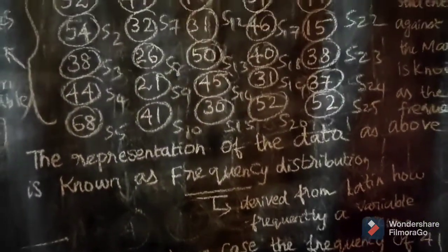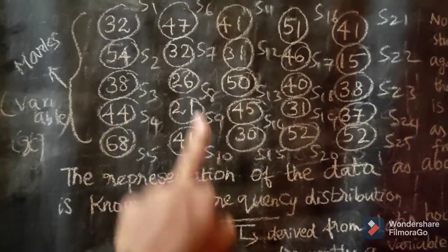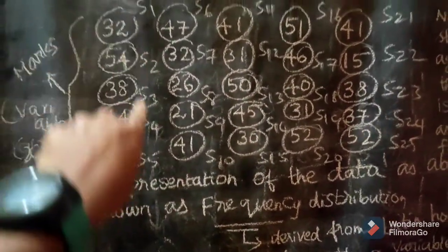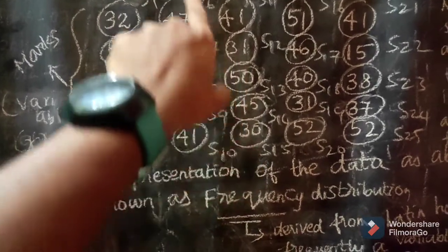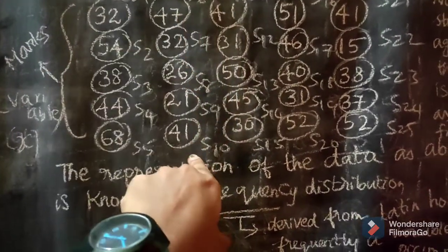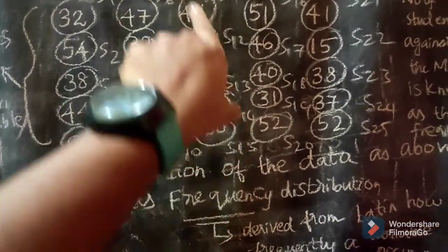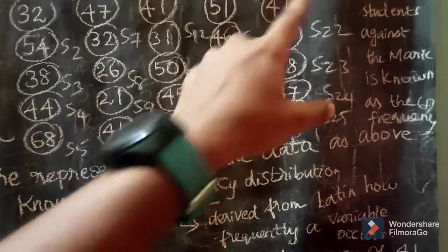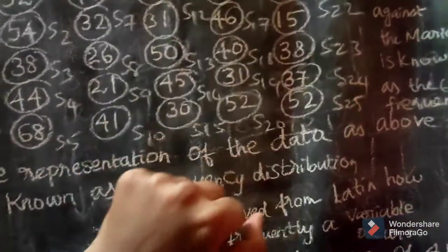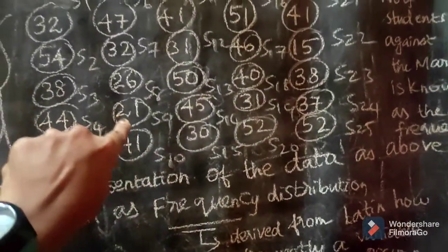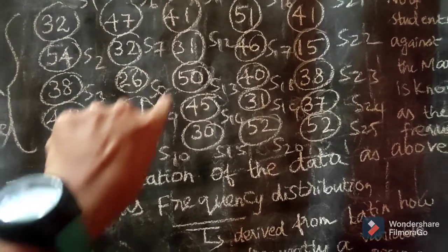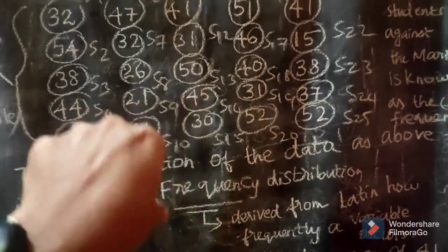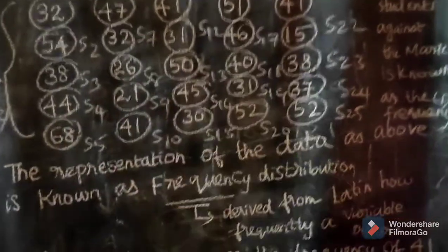For example, looking at the above case: take the value 41. Looking at the data, 41 appears — first column shows 41, 2nd column 1, 3rd column 1, 4th column 1 — so 3 students have 41 marks.